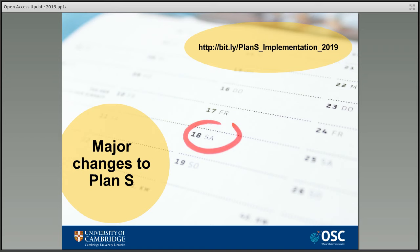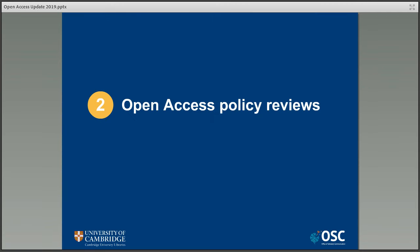Finally, Coalition S have released some new guidance on possible ways that the Plan and the principles might be implemented, and those guidelines are available at the address on the screen. Plan S was and will be a major change for research funders not just in Europe but across the globe, so it's no surprise that a couple of open access policy reviews are going on. The two major ones I want to touch on come from UKRI and the Wellcome Trust.